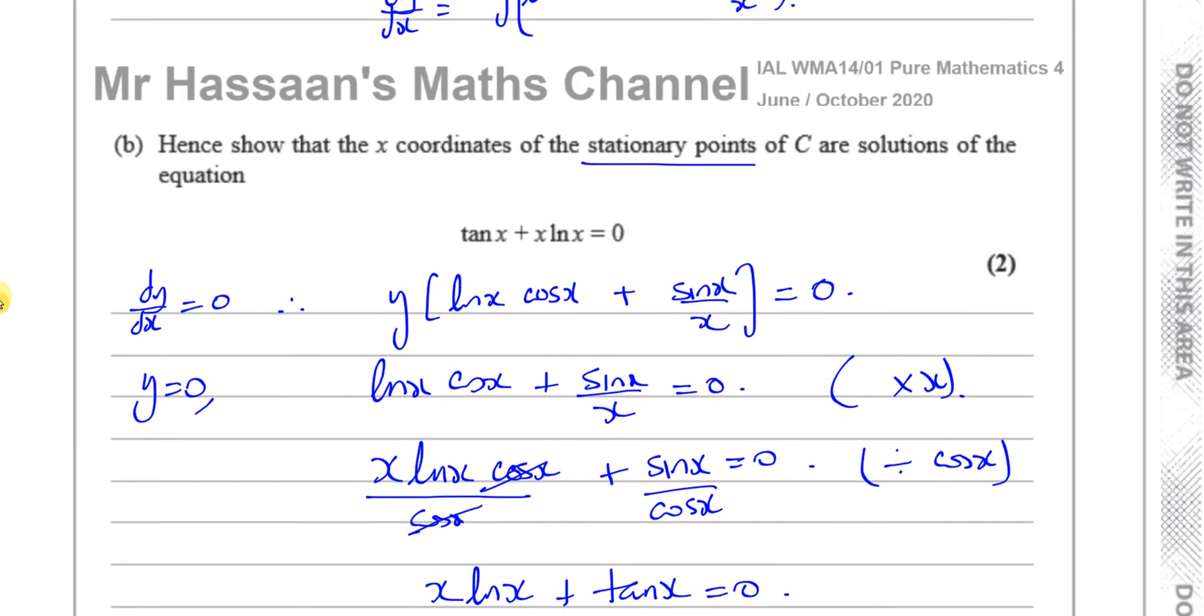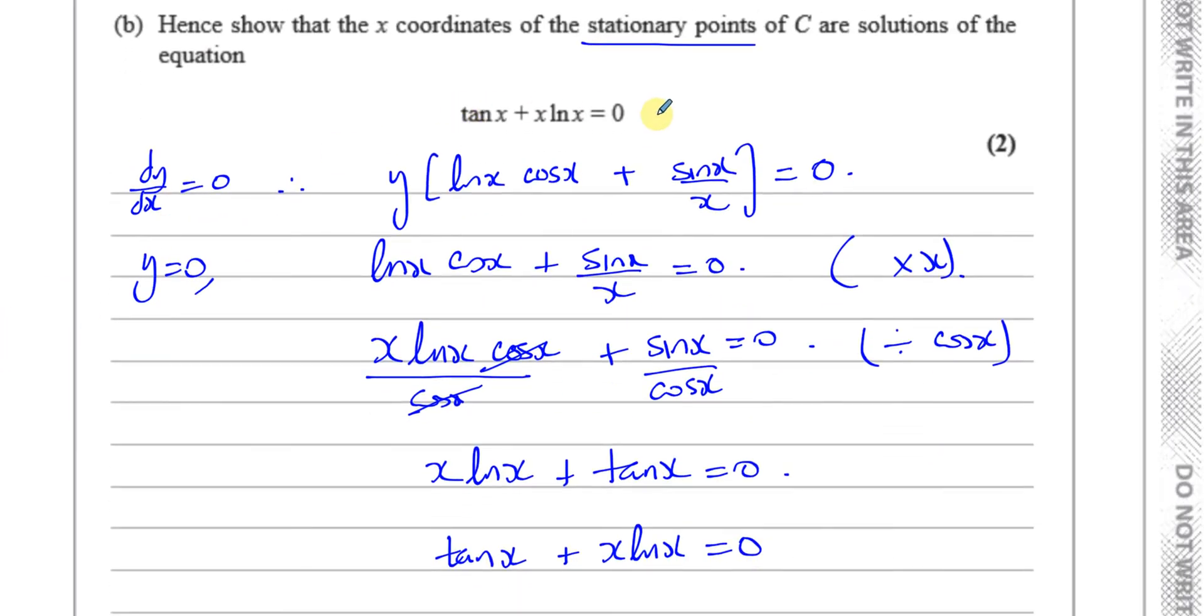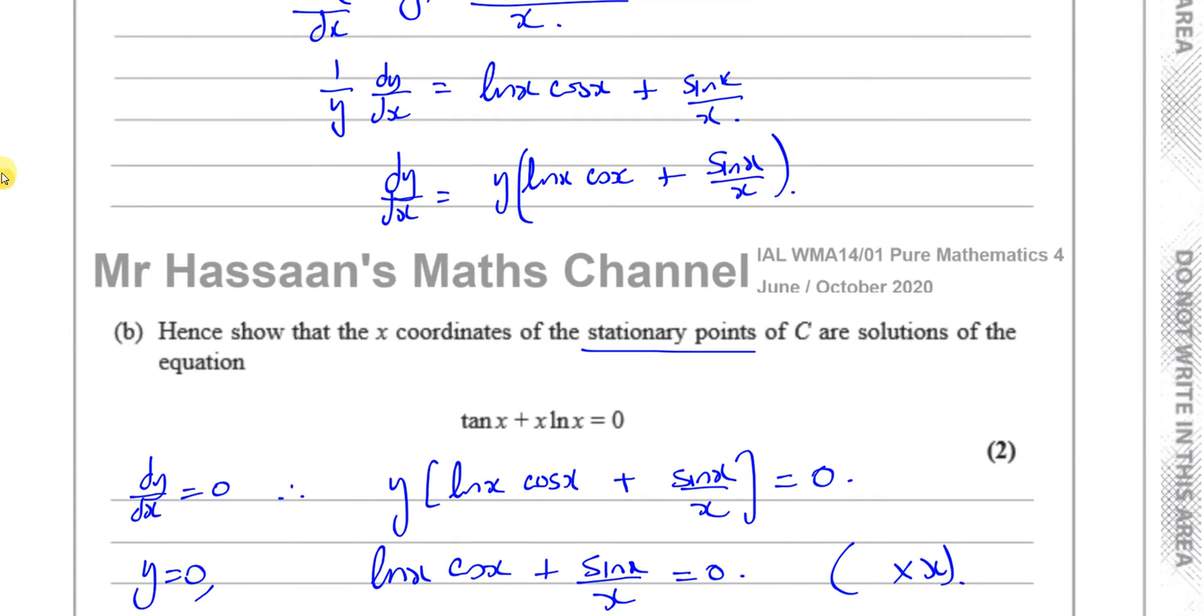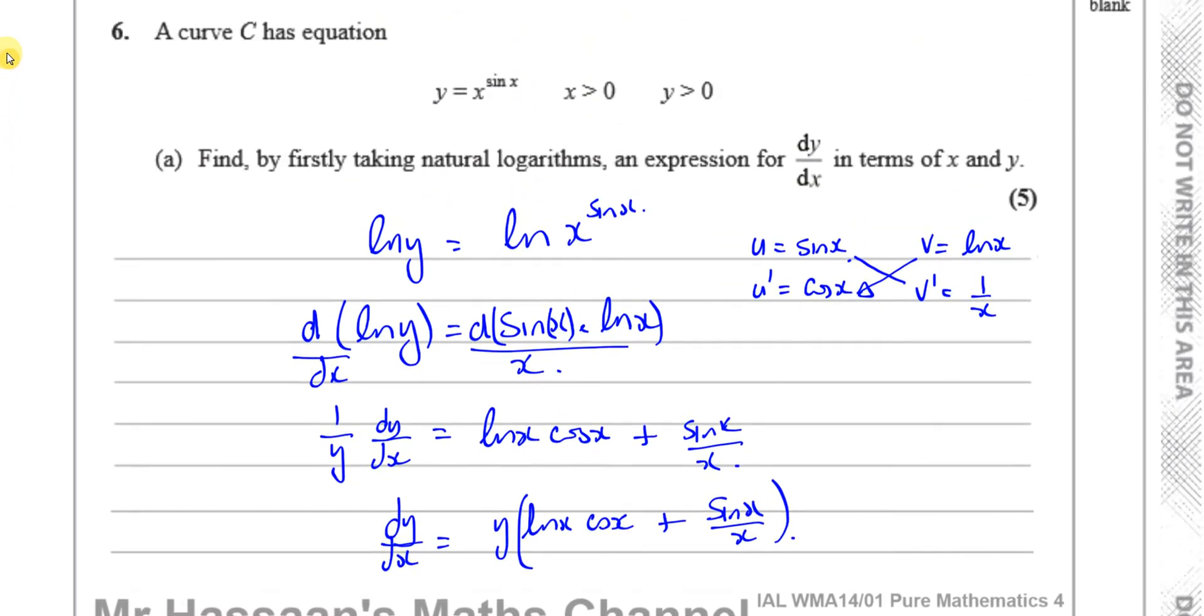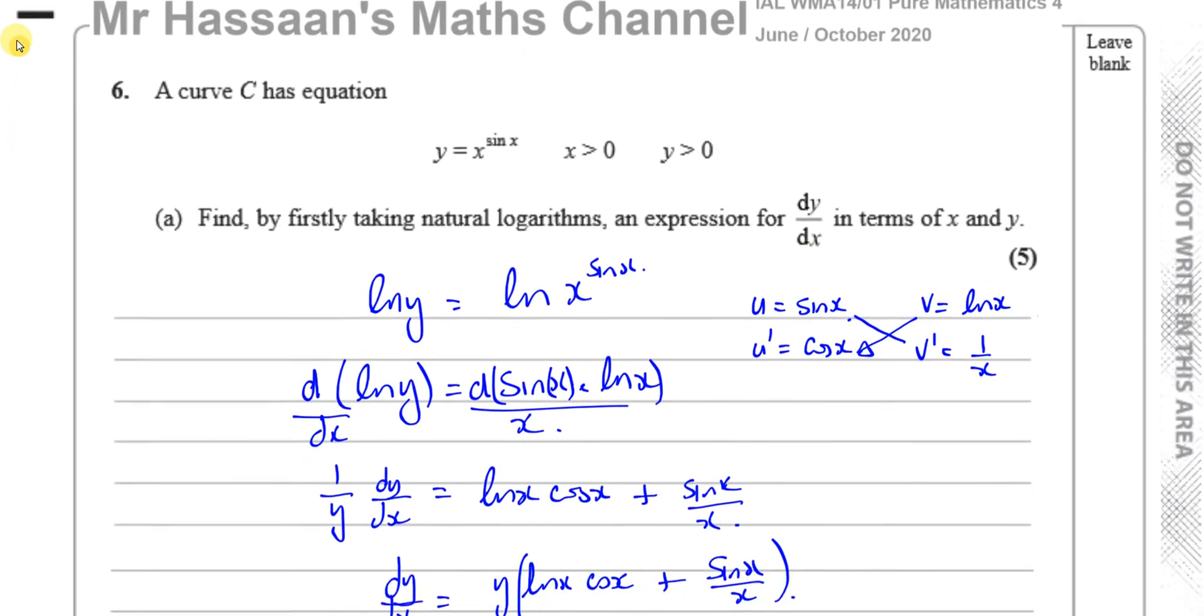Now when they ask you to show something and they give you what it's supposed to be, you have to be very careful to show your steps clearly. So there's the answer for part b. That was a pretty short, simple question. So that's number six finished.